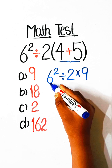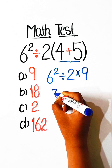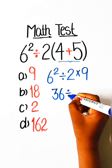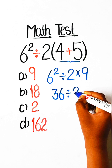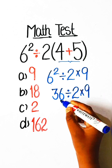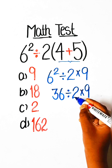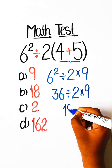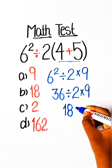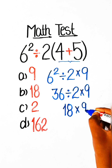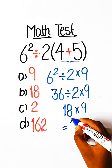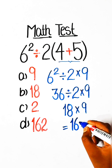And 6 squared equals 36. Divide by 2, multiply 9. 36 divided by 2 is 18, multiply by 9 — 18 nines are 162.